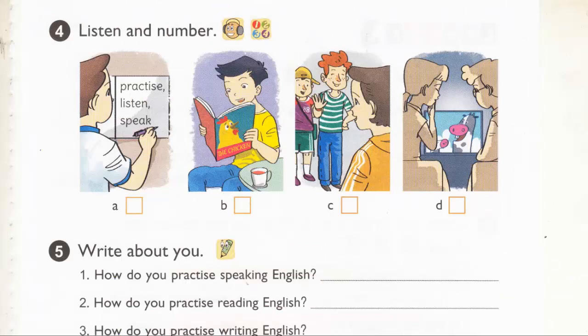Page 49. Activity 4. Listen and number. 1. You speak English very well. Thank you, Tony. How do you practice speaking? I speak English with my foreign friends every day. 2. How do you learn English vocabulary? I write new words and read them aloud. Why do you learn English? Because I want to sing English songs.